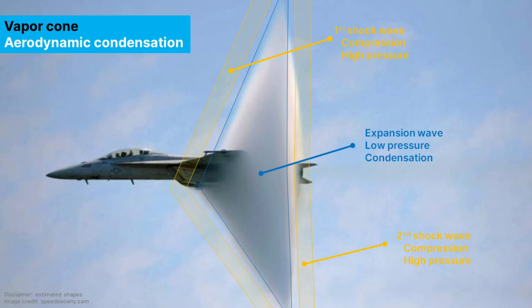Now right after this white disc there's a second shock wave which compresses the air again eliminating the water vapor. And this is the cause of the vapor cone.